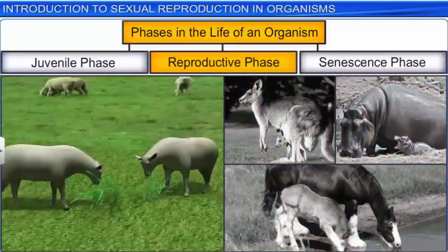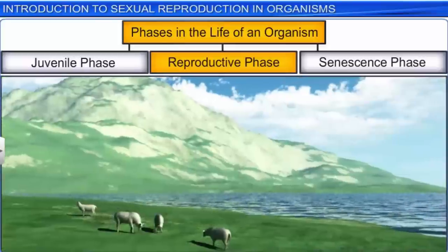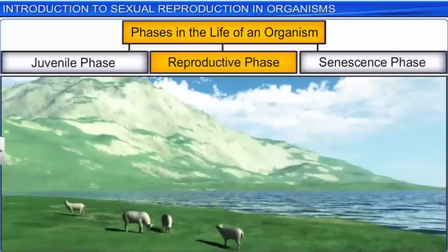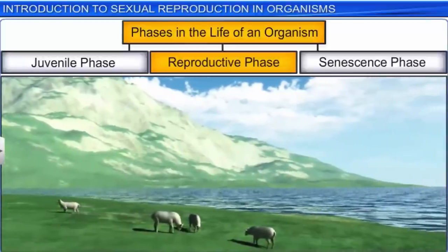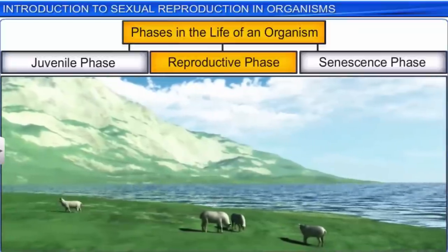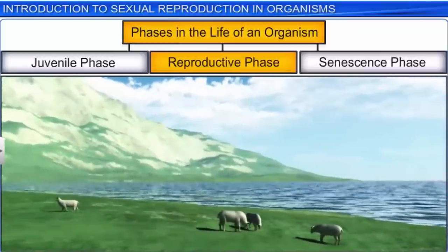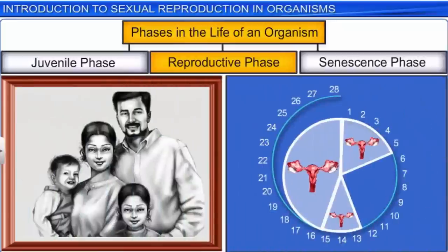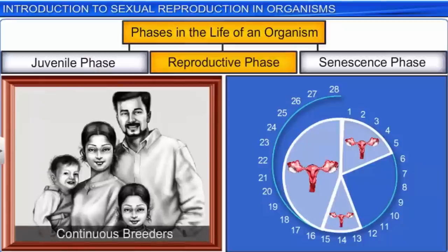These cycles stop once the female becomes pregnant and resume after the female has given birth to offspring. Moreover, placental mammals, especially those living in the wild, exhibit these cyclical changes and breed only during favorable seasons — they are therefore called seasonal breeders. Sheep, for instance, have spring as their favorable season for breeding, allowing for the birth of lambs when the weather is warm and there is plenty of grass and water available. In human beings, on the other hand, females experience the menstrual cycle and are active throughout their reproductive phase — they are therefore called continuous breeders.